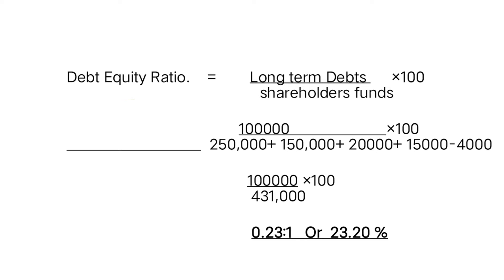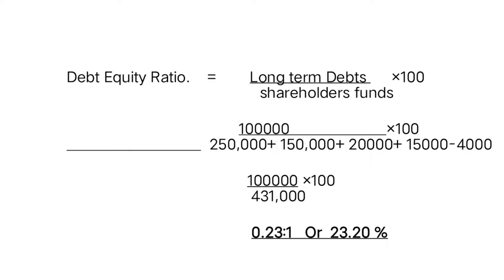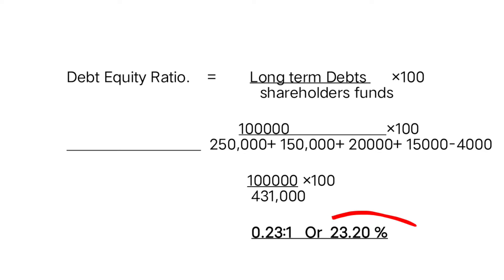Debentures are one lakh. Shareholders' fund: equity share capital two lakh fifty thousand, preference share capital one lakh fifty thousand, general reserve and profit and loss account fifteen thousand — but we must deduct fictitious assets, which is preliminary expenses of four thousand. So: one lakh divided by (two lakh fifty thousand plus one lakh fifty thousand plus twenty thousand plus fifteen thousand minus four thousand) equals one lakh divided by four lakh thirty-one thousand, giving 0.23:1 or 23.20 percent.